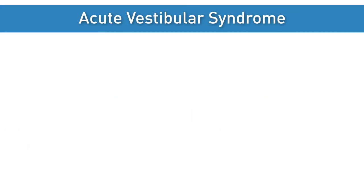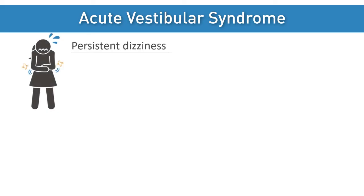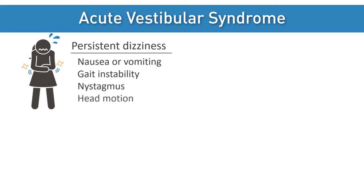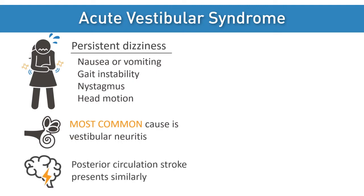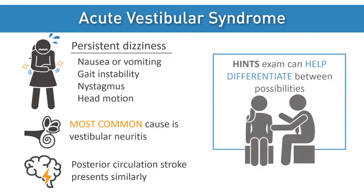Acute vestibular syndrome patients report persistent dizziness associated with nausea or vomiting, gait instability, nystagmus, and head motion intolerance lasting days to weeks. The most common cause is vestibular neuritis. However, a posterior circulation stroke can present similarly. The HINTS exam can help differentiate between both possibilities.